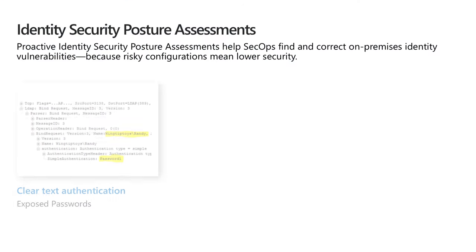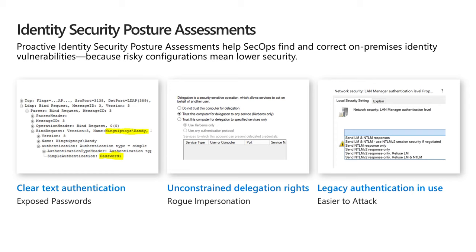Prevention is about figuring out where vulnerabilities are before they can be exploited. Azure ATP identity security posture assessments help you identify configuration gaps so risky configurations can be updated. Examples of configurations broadening the attack surface include: applications using clear text authentication that expose passwords; using unconstrained delegation where a server or service account can impersonate a user to authenticate to any service on any host; and weaker protocols using legacy authentication standards, which are generally more open to attack.